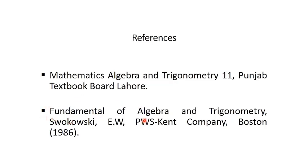Second number पर Fundamental of Algebra and Trigonometry — यह एक book है और यह भी आपकी recommended book है। इससे भी आप अपने given topic के questions कर सकते हैं, assignment ठीक है। Fundamental of Algebra and Trigonometry — Swokowski, EW, PWS Kent Company, Boston, 1986 — यह आपकी book है। आप इसको भी follow करके जो lectures आपको पढ़ाए जा रहे हैं, follow कर सकते हैं।